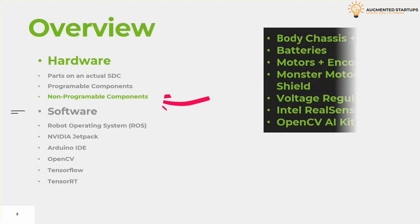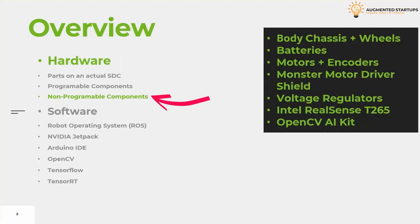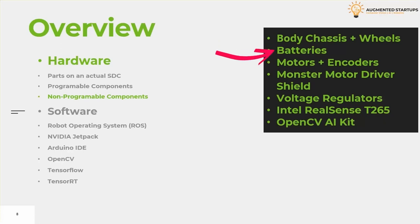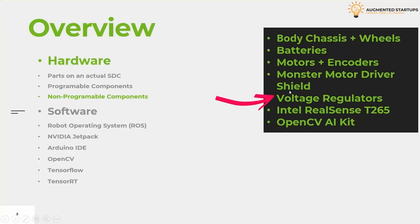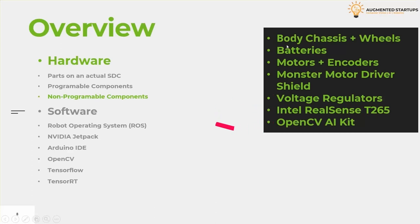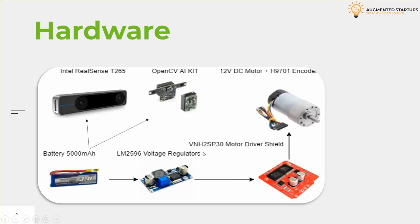Let's move on with the non-programmable hardware components. They are called non-programmable as they do not require any programming. We will need the body chassis and wheels, batteries, motors, encoders, motor driver shield, voltage regulators, Intel RealSense camera, and the OpenCV AI kit. Here in this figure, you can see the different parts of non-programmable hardware.